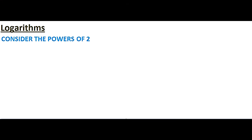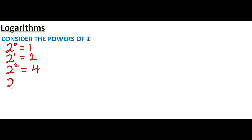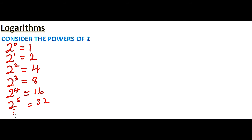To start our lesson, we look at what we call the logarithm. Consider the powers of 2. We can write: 2 to power 0 equals 1, from our previous lesson. 2 to power 1 equals 2. 2 squared equals 4. 2 cubed equals 8. 2 to power 4 equals 16. 2 to power 5 equals 32, and we can continue on and on. Now, we notice that here we have what we learned as indices.